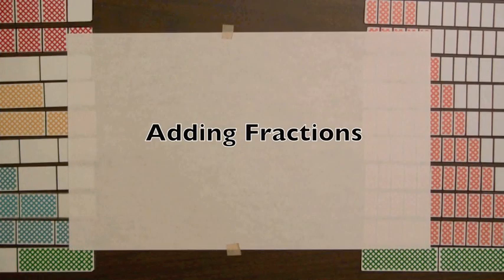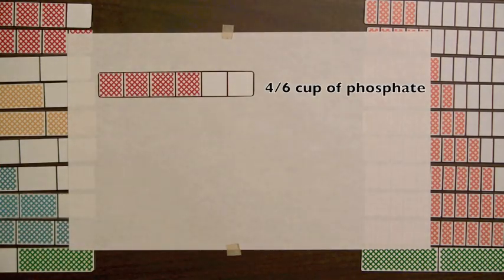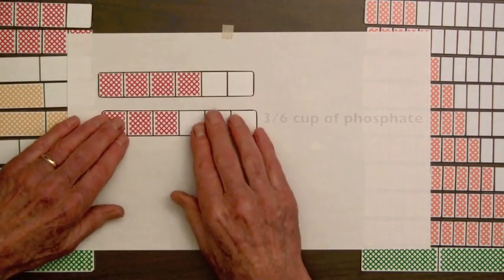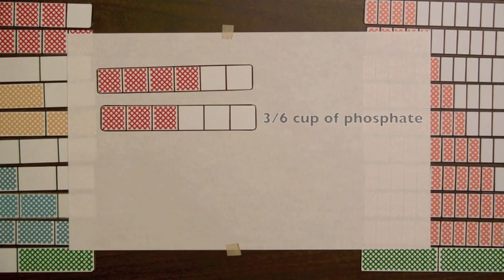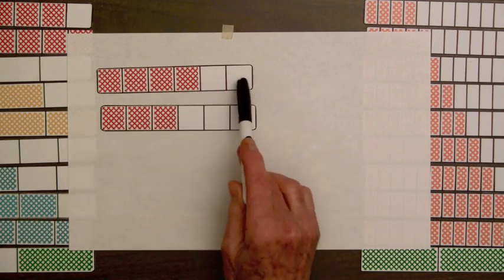Suppose a crystal growing experiment requires 4/6 of a small measuring cup of phosphate for the first part of the experiment and requires 3/6 of this cup of phosphate for the second part of the experiment.